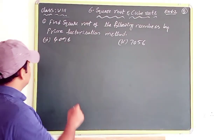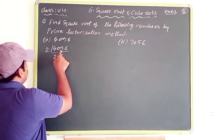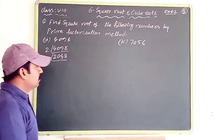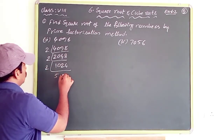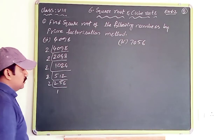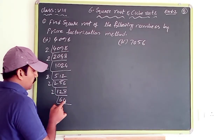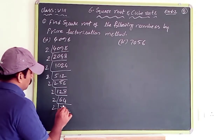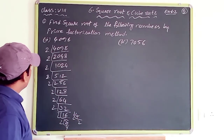The next number is 4096. The last digit is 6, so it is divisible by 2. Dividing repeatedly by 2: 4096÷2=2048, ÷2=1024, ÷2=512, ÷2=256, ÷2=128, ÷2=64, ÷2=32, ÷2=16, ÷2=8, ÷2=4, ÷2=2, ÷2=1. So 4096 = 2 repeated 12 times (2¹²), and the division is complete with all 2s.